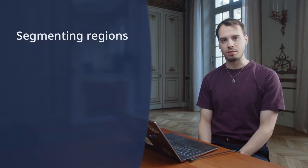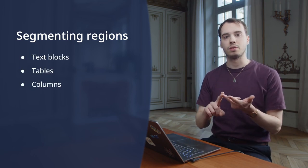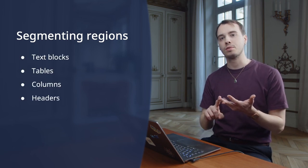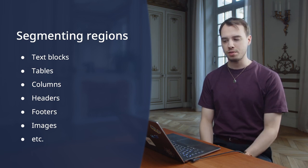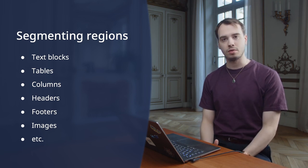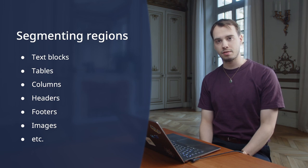Let us see first how region segmentation works. The components to identify in segmentation can include text blocks, tables, columns, headers, footers, etc. The goal is to segment the document into meaningful regions that can be further processed or analyzed.